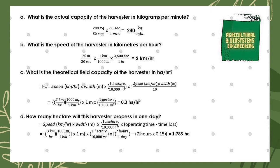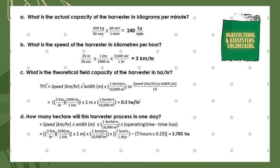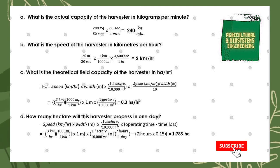Next, we solve for the speed of the harvester in kilometers per hour. We use the conversion factors: one kilometer equals 1000 meters, and 3600 seconds equals one hour. We multiply our given speed of 25 meters per 30 seconds by all conversion factors; the units of meters and seconds cancel, giving a final answer of 3 kilometers per hour.